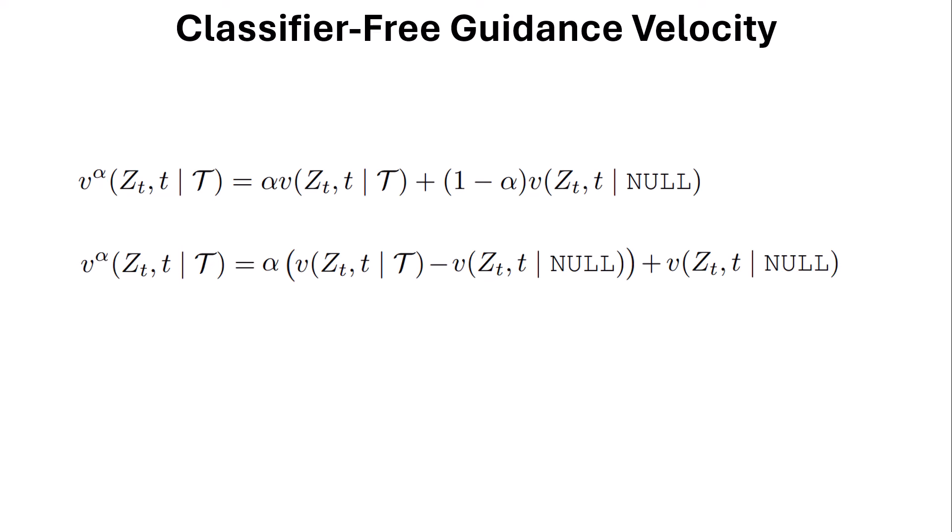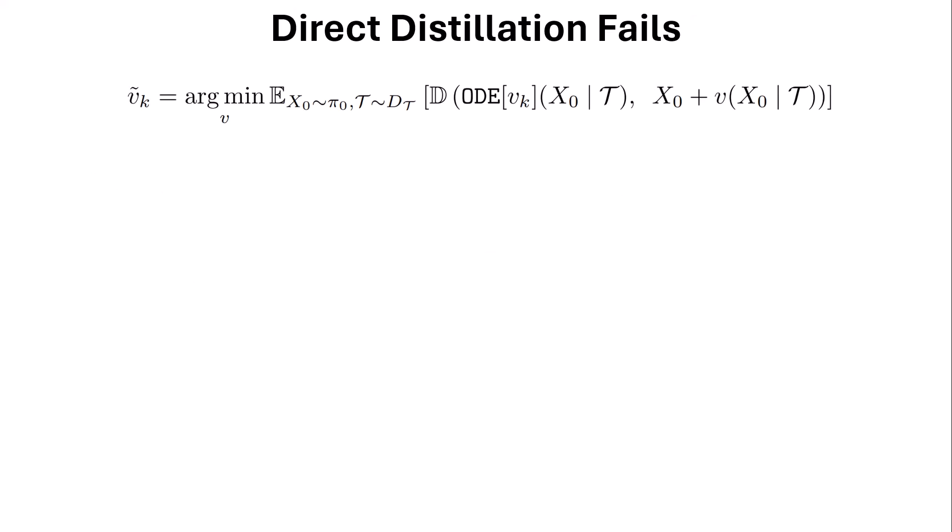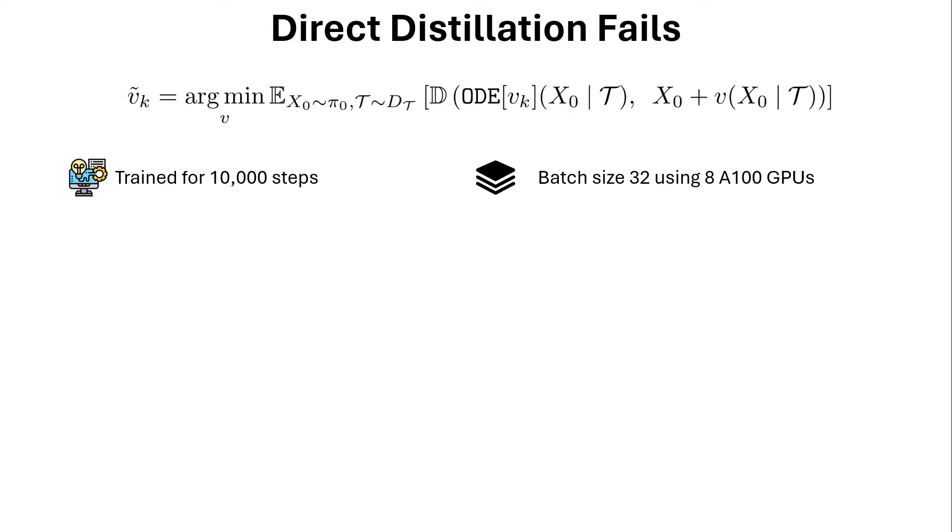Now let's talk about experiments. The first experiment shows that direct distillation fails. If we start from Stable Diffusion with 25 steps (a curvature) and try to distill that knowledge to a new v doing it in a single step, it turns out it's not possible. They trained for 10,000 steps with a batch size of 32 using eight A800 GPUs.